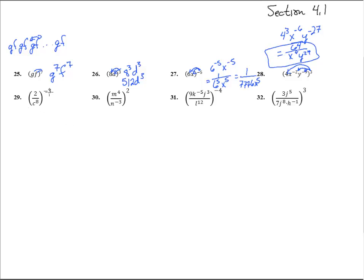Number 29. So this negative 3 goes on that and it goes on that. We get 2 to the negative 3 power over c to the negative 24 power. That's 2 to the third on the bottom. That goes down and then that goes up. C to the 24th. So that's c to the 24th over 8.